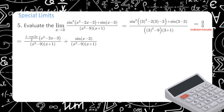We solve using special limits by splitting the fraction as a sum or product of two or more fractions. Using the identity sin²(x) = (1 - cos(2x))/2, we split and rewrite the expression as: (1 - cos(2x))/2 · (x² - 2x - 3)/(x² - 9) · (x + 1) plus sin(x - 3) / ((x² - 9)(x + 1)).